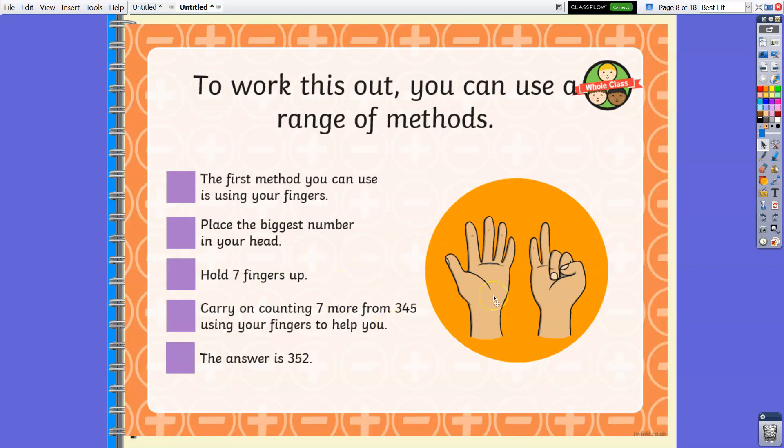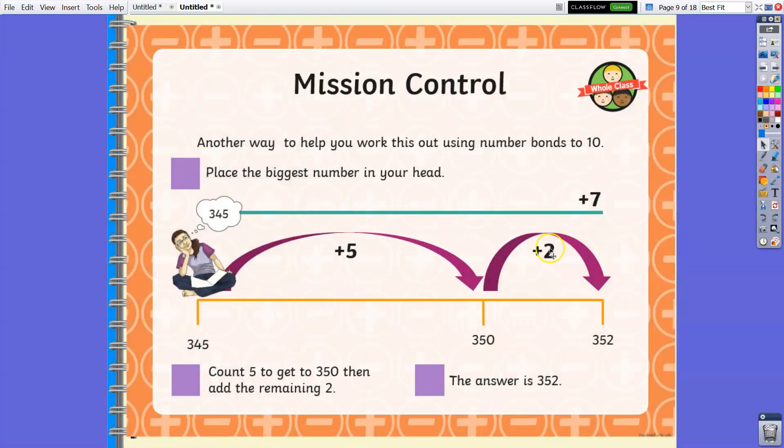Then carry on counting seven from 345. The answer is 352. So 345, 346, 347, 348, 349, 350, 351, 352. Or you can count 5 to get to 350, then add the remaining numbers. So 345, count by 5, the next is 350. You've already added 5, then just add 2 to make 352. No need to use your fingers to count.